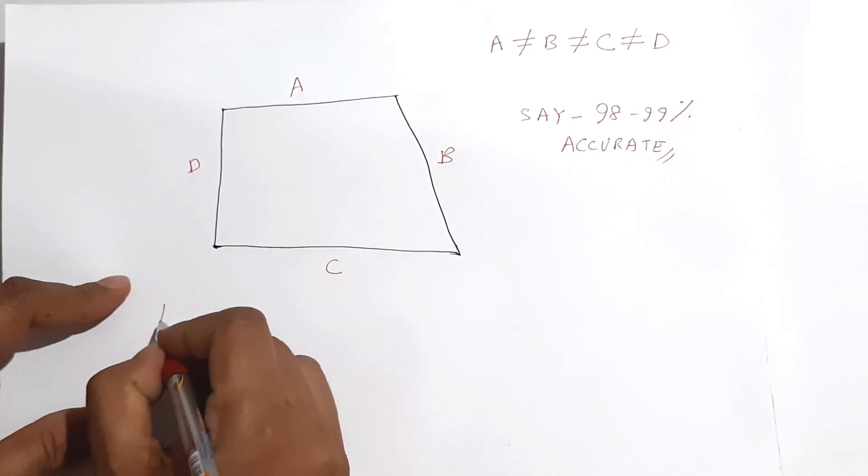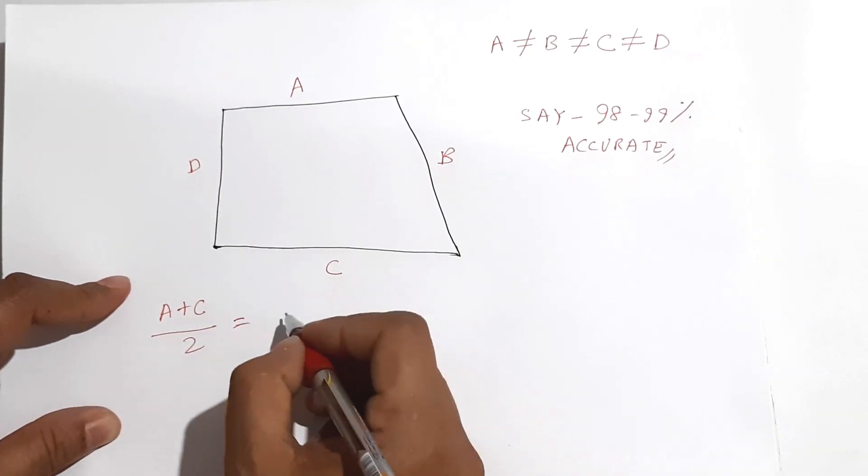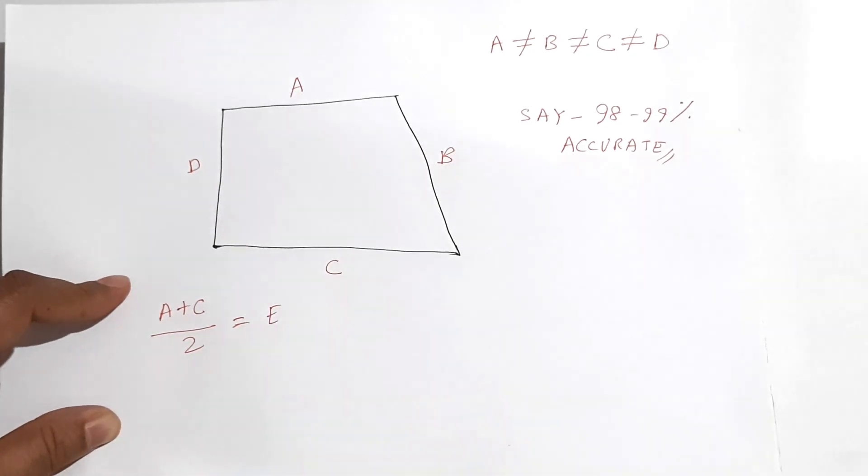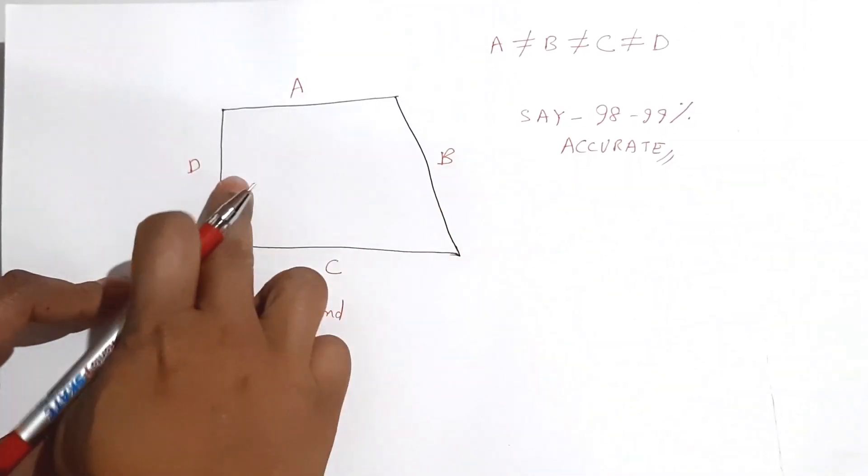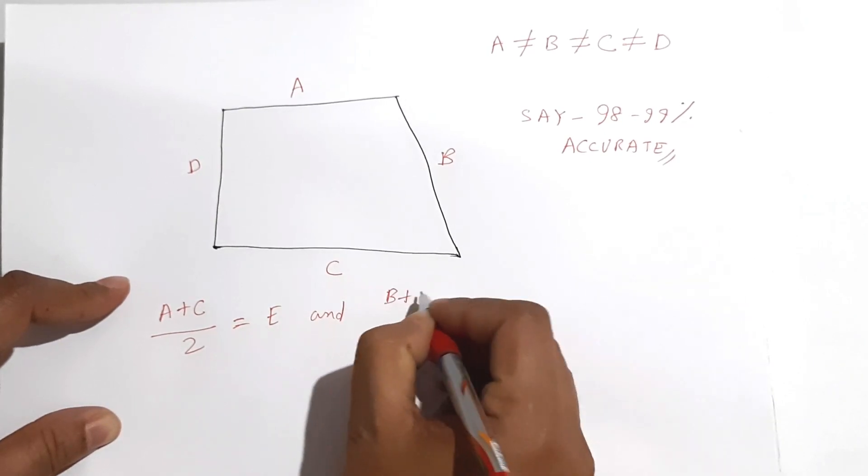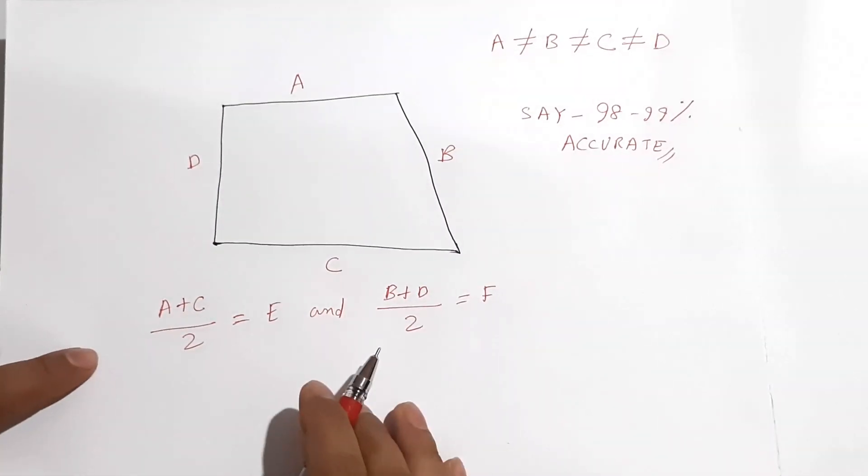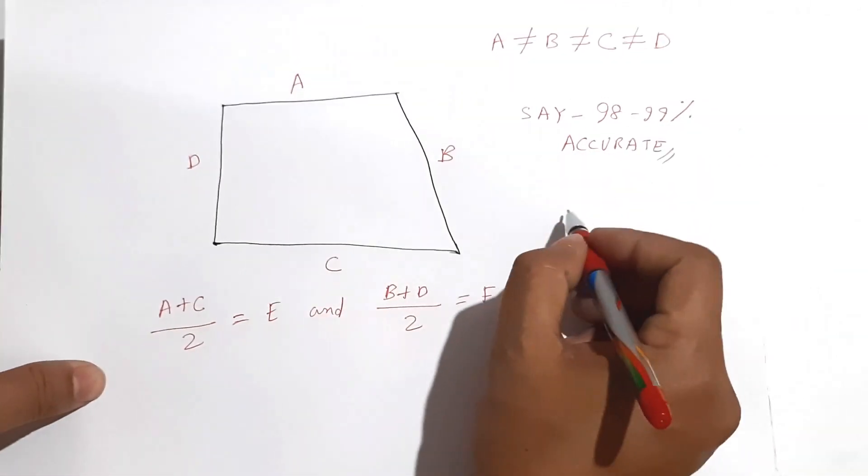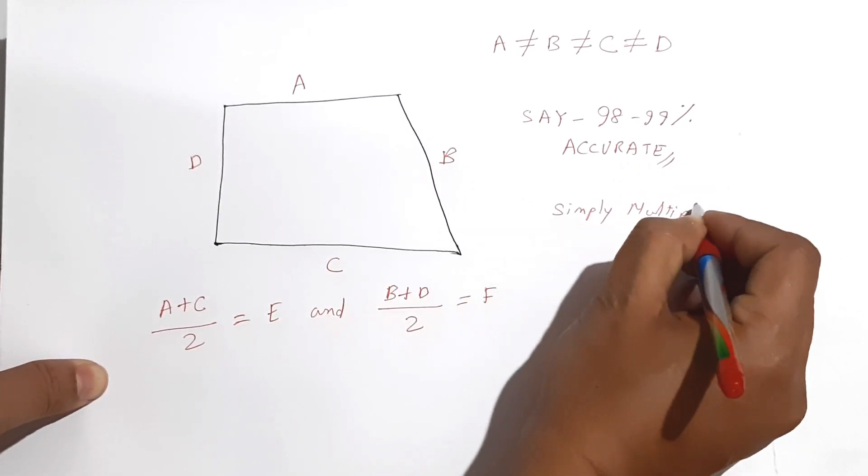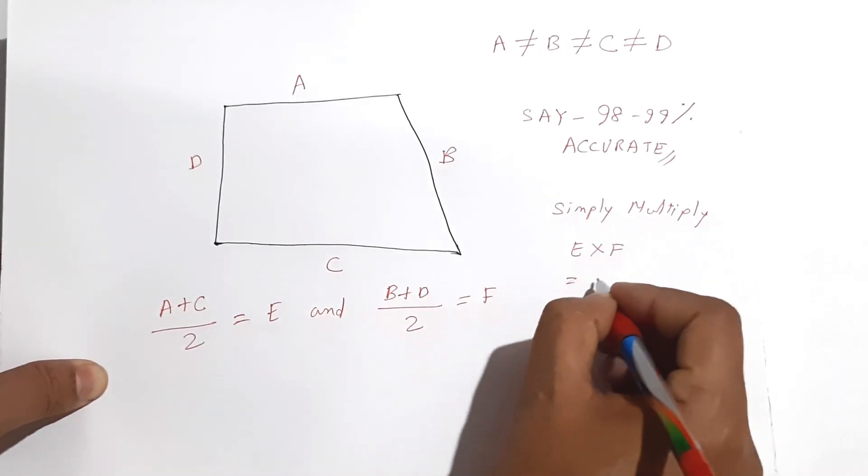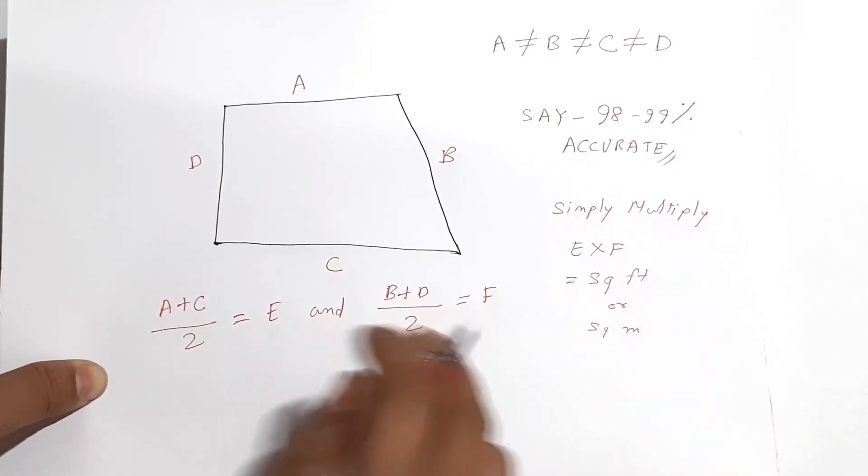And that simple way is just take the sum of these two and sum of these two. Suppose A and C are in opposite sides. So A plus C divided by 2 equal will be a value, say that is E. Again, B plus D divided by 2 equal F. Now simply multiply E and F. Simply multiply E into F and you will get the square feet or square meter of that area.